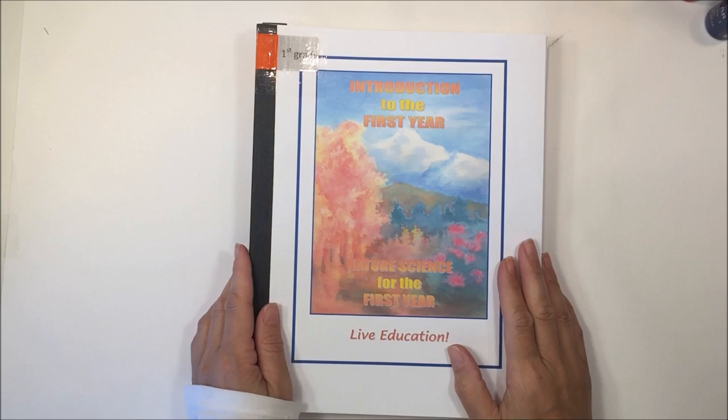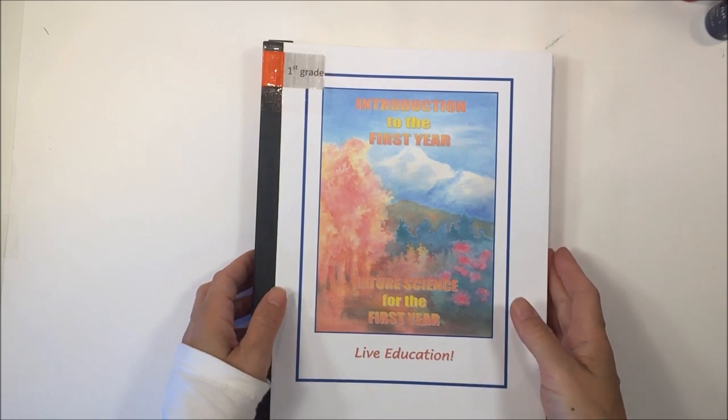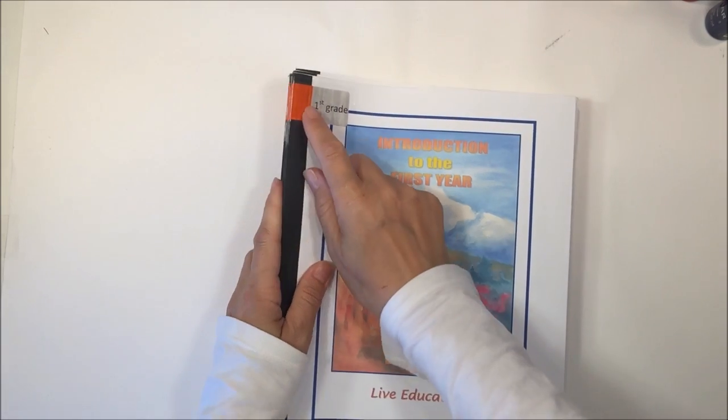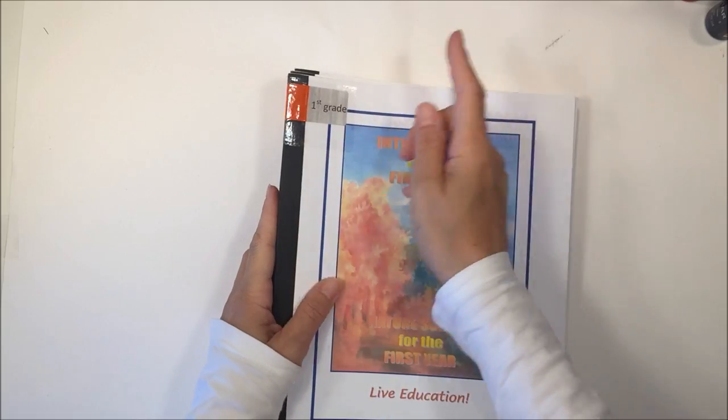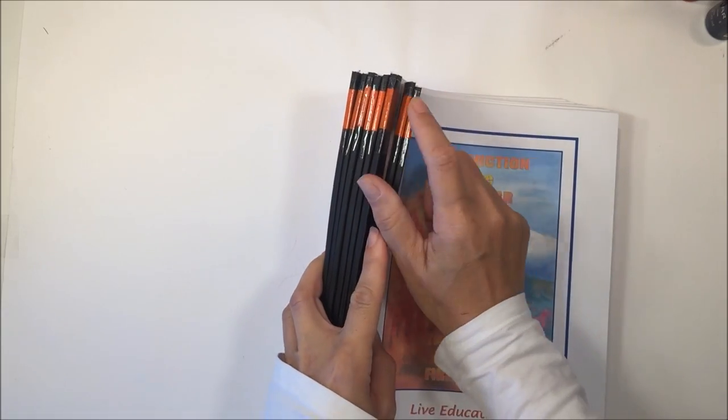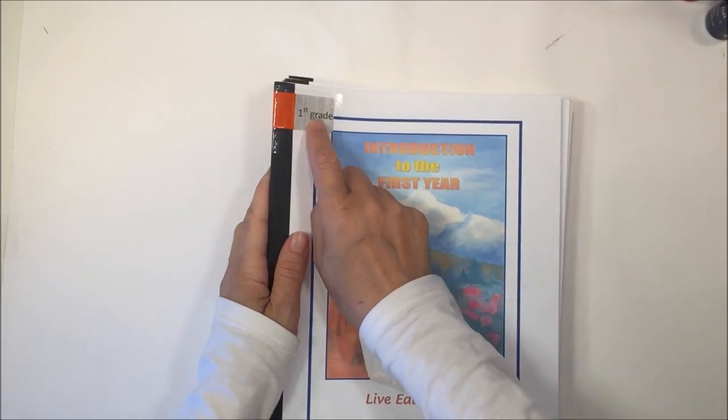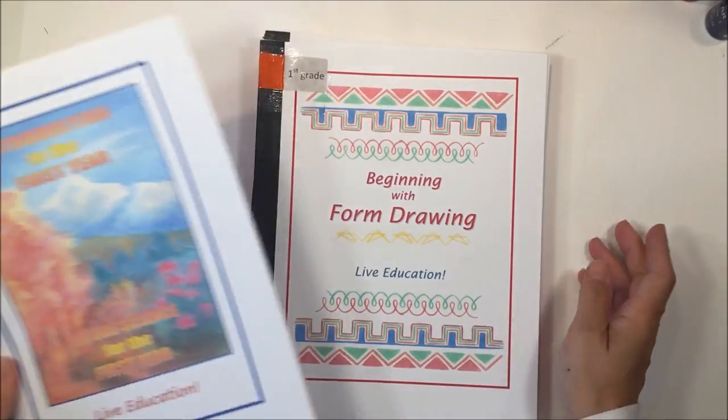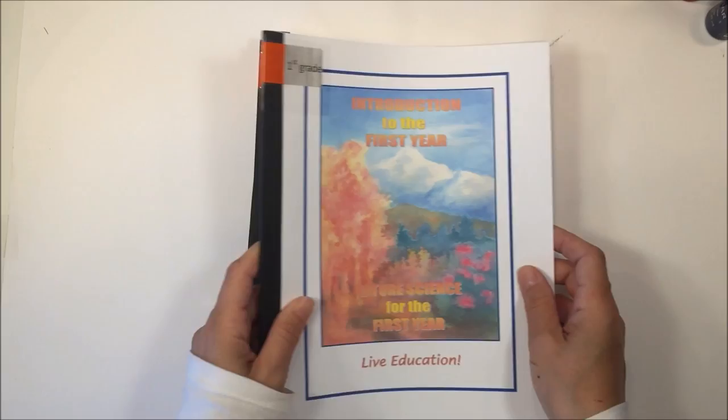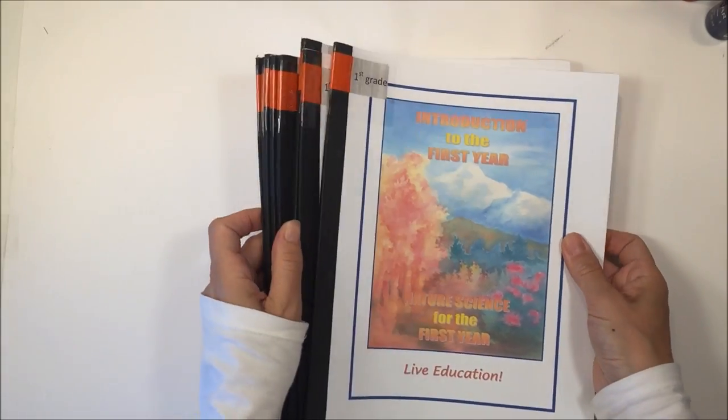The first thing I want to show you is the curriculum that I'm using from Live Education. This is for first grade. I go ahead and print off labels for the entire curriculum and I color code them so that it's easy for me to find the books that I need. I also put that it's first grade because it doesn't say first grade on any of the other books.